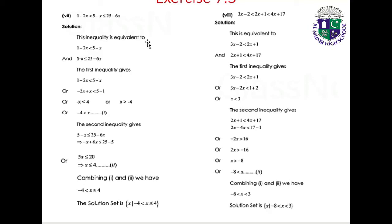Part 7: 1 minus 2x less than 5 minus x less than or equal to 25 minus 6x. First inequality: minus x less than 4, so x greater than minus 4. Second inequality: 5 minus x less than or equal to 25 minus 6x, giving 5x less than or equal to 20, so x less than or equal to 4. Combining: minus 4 less than x less than or equal to 4. Solution set: {x | -4 < x ≤ 4}.